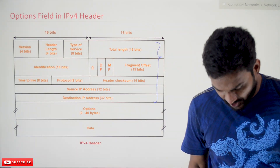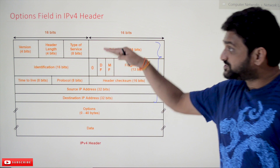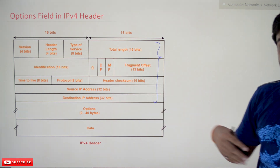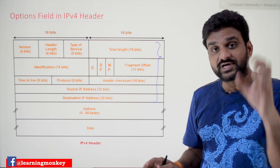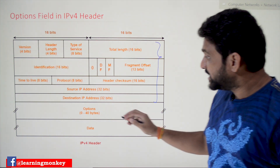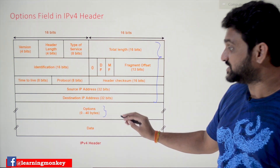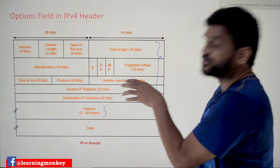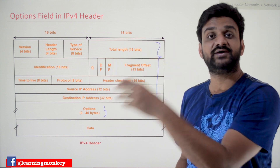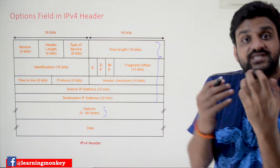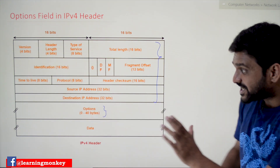Now let's try to understand the options field. Apart from the basic mandatory fields, if you want to send extra options, there are different types of options available. Based upon the requirement, we have this dynamic space of zero to forty bytes allocated for options. If the datagram being transmitted requires certain options, we can use this options field.